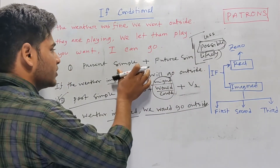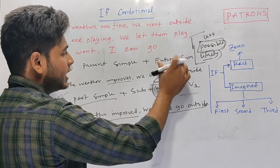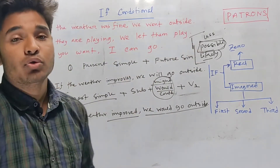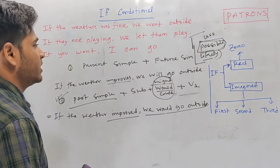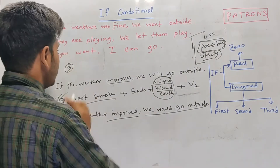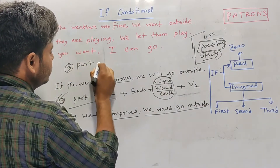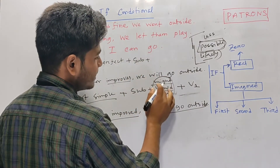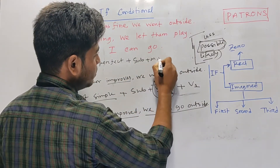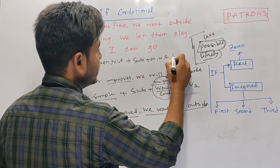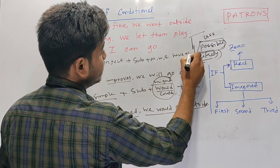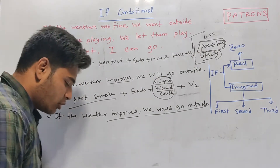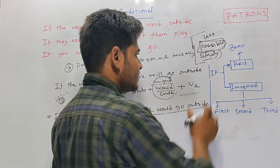Finally, the first condition is the same as the last condition. The third condition uses past perfect tense. The second condition uses: subject plus might, would, or could have, plus the past participle. How do we use the first condition?